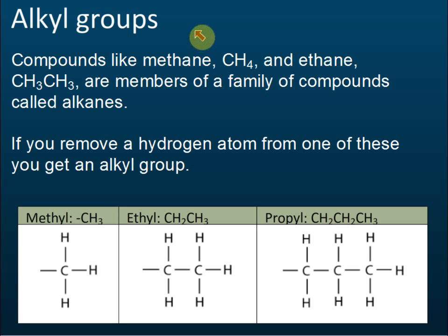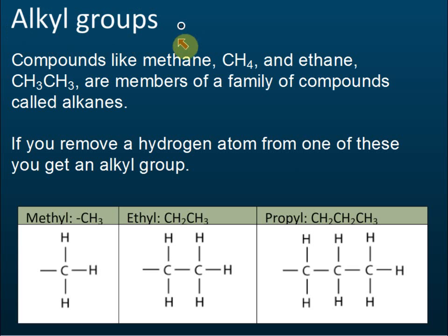To name an alkane with a branch, we need to know the name of the branch. Branches fall into a special group called the alkyl groups — all branches of alkanes are members of the alkyl groups. Alkyl groups are groups of atoms where one hydrogen is removed from an alkane.